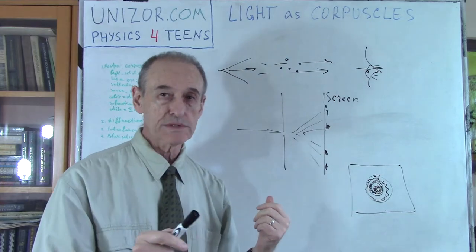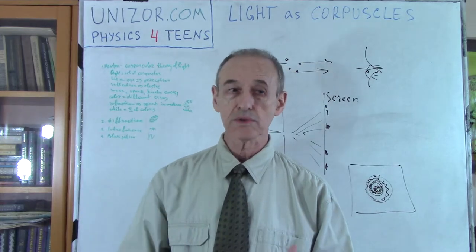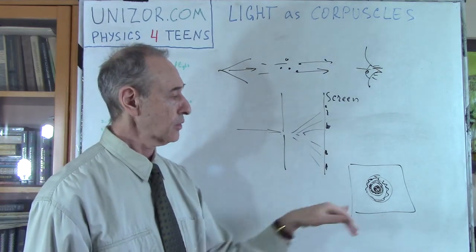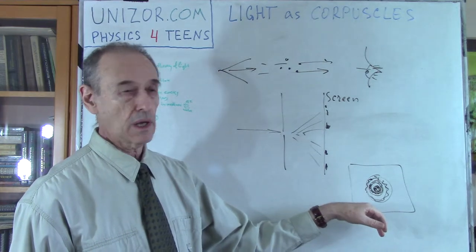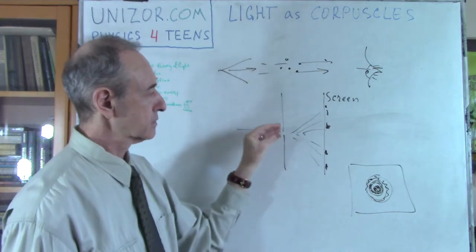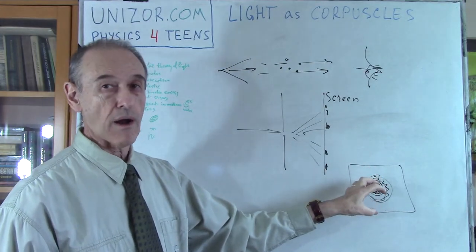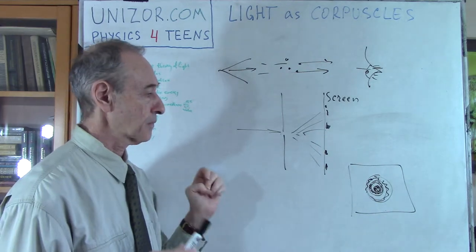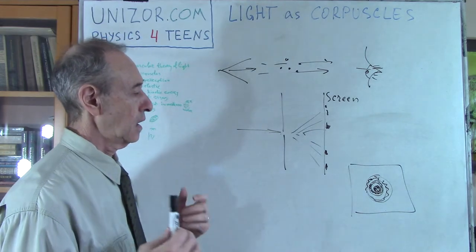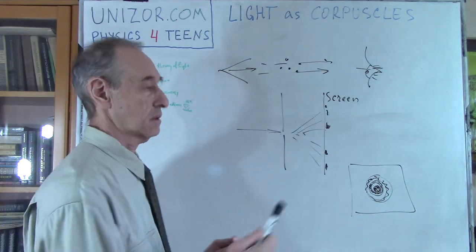In the notes for this lecture — and every lecture on UniZor.com has textual notes and references — among those notes is a picture of how this actually looks with red light going through a small hole, producing bright red and dark concentric circles. This cannot be explained by the Newtonian corpuscular theory, and that was one of the reasons for developing other theories, which we will talk about in the next lecture.